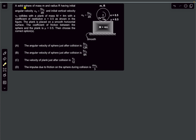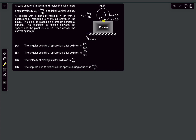In this problem we have a rotating solid sphere whose omega is 5v0 divided by 4r, with an initial velocity of v0, colliding with a plank on a smooth ground. The coefficient of restitution for the collision is 0.5 and the friction coefficient between the sphere and the plank is also 0.5.